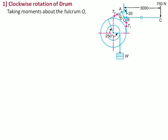Now for the clockwise rotation of the drum, taking moments about the fulcrum O. So if we analyze the diagram, this is the clockwise rotation. The right side will be T1 and then T2 will be on the other side. So this T1 is producing clockwise moment, 750 is also producing clockwise moment, whereas this T2 is producing anticlockwise moment. So let us write down the moments: 750 multiplied by 3000, T1 multiplied by 25, and T2 multiplied by 100.